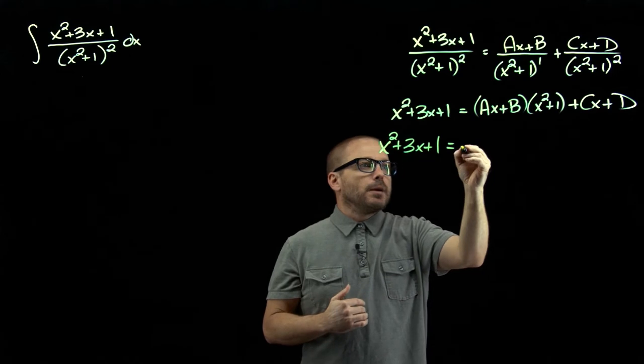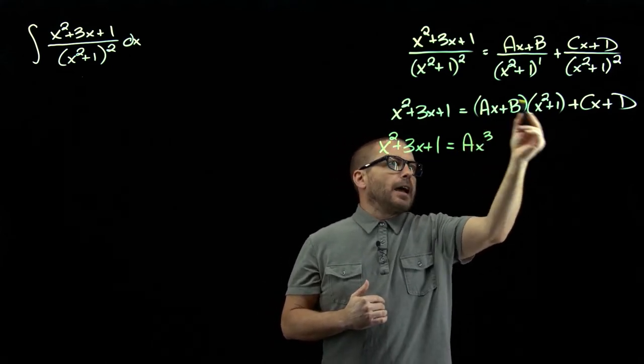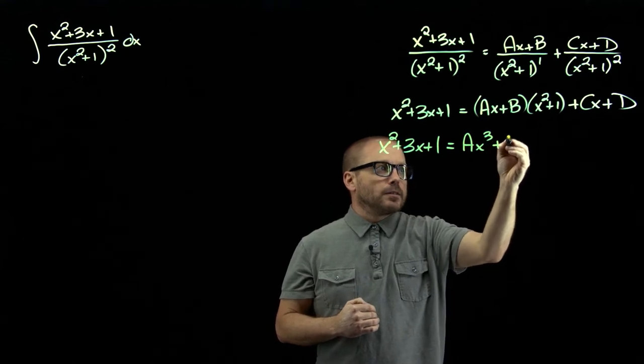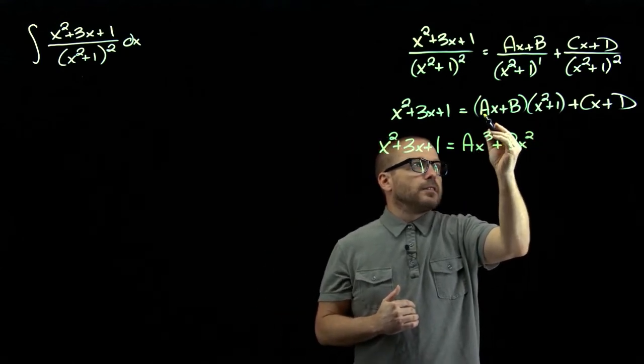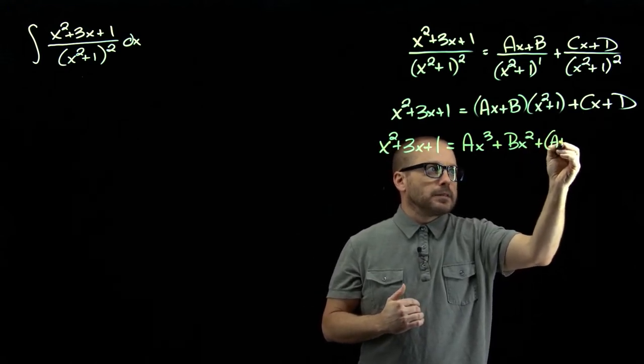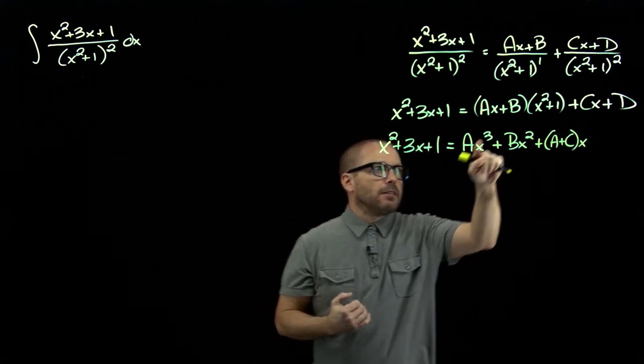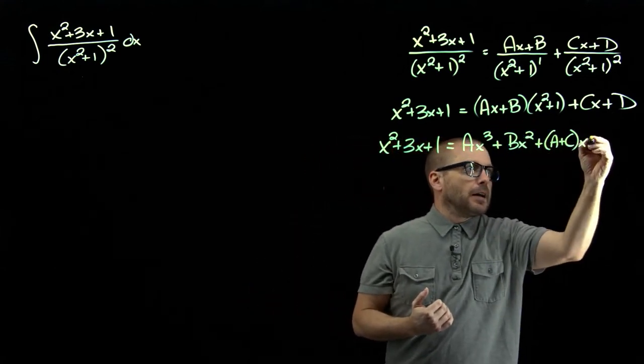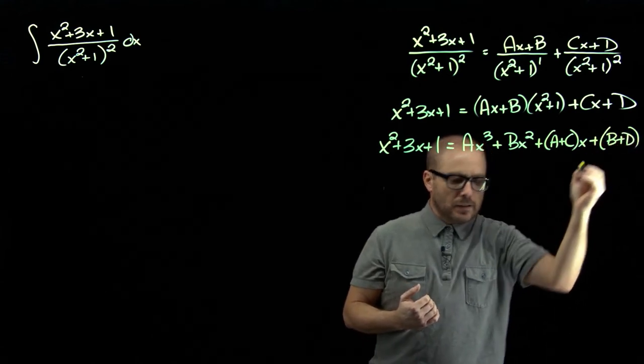And over here, we've got a cubic term, ax cubed. Ax, bx squared, so we have a squared term. We'll have ax and we also have cx, so we have a plus c on our x term. And then lastly, we'll have a constant b and a constant d, so we'll have b plus d there.